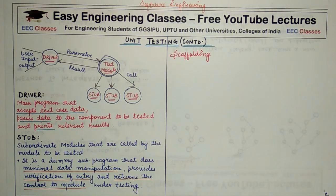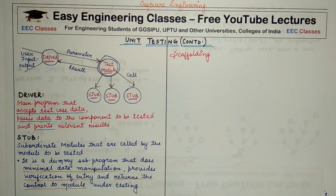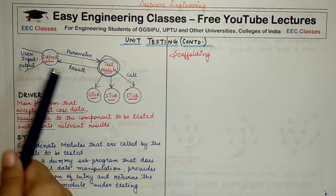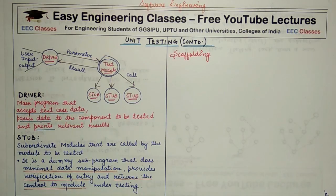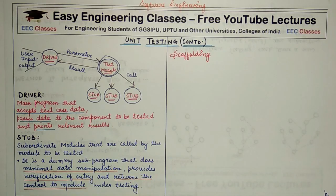Hello friends, welcome back to easy engineering classes. In today's lecture, we will continue on the topic of unit testing. In the last class, we saw what is going to happen in unit testing. We need to implement two basic entities for unit testing, which are driver and stub. In this lecture, we will understand the functions of these two entities.